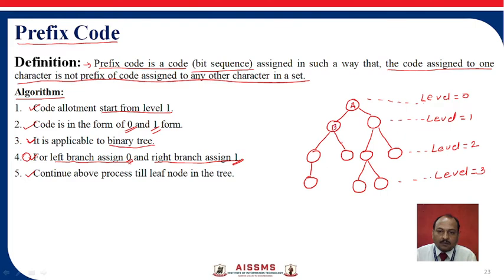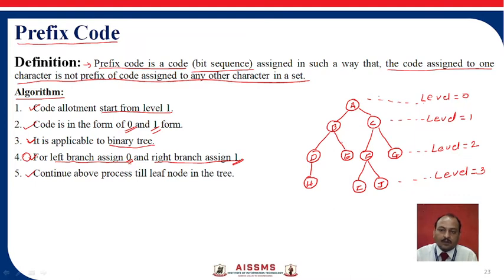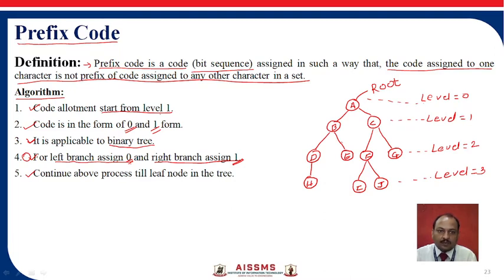We will give names to each and every vertex in the tree: A, B, C, D, E, F, G, H, I, and J. We have labeled all the diagram — that is level 0 to 3, meaning 4 levels. A is the root node. According to the algorithm, we will cross-check and try to assign the code to every vertex. Code allotment starts from level 1, so level 0 is exempted and we will not assign any code to it.